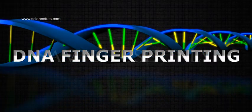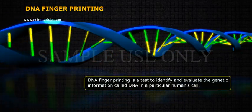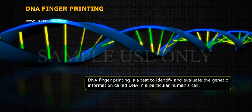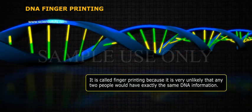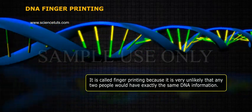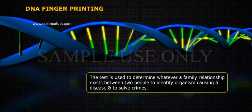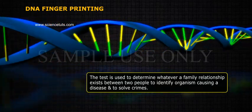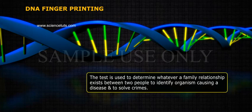DNA Fingerprinting is a test to identify and evaluate the genetic information called DNA in a particular human cell. It is called fingerprinting because it is very unlikely that any two people would have exactly the same DNA information. The test is used to determine whether a family relationship exists between two people, to identify organisms causing a disease, and to solve crimes.